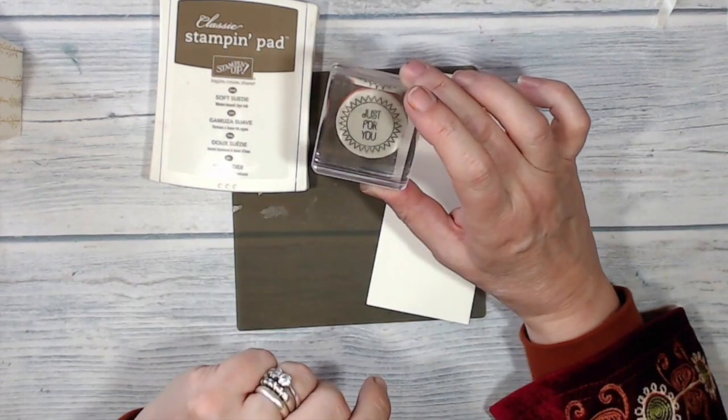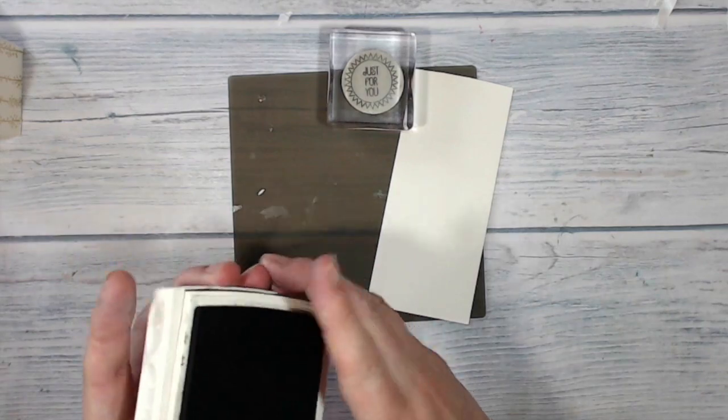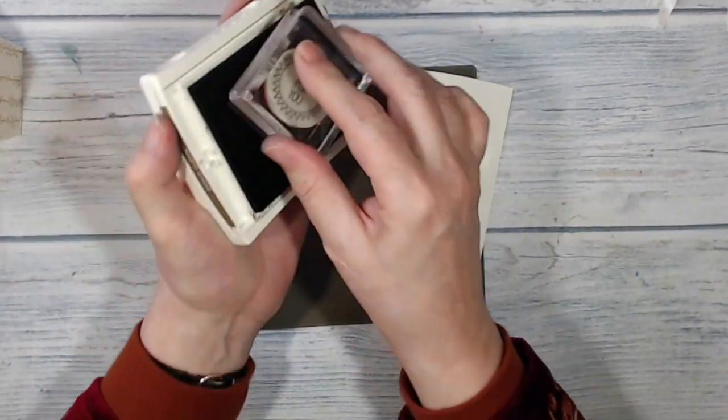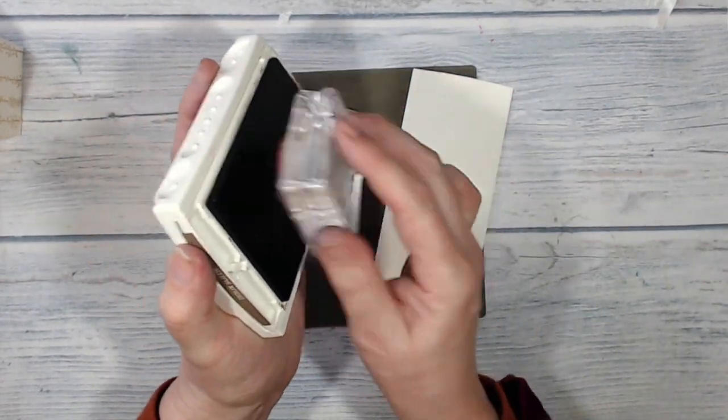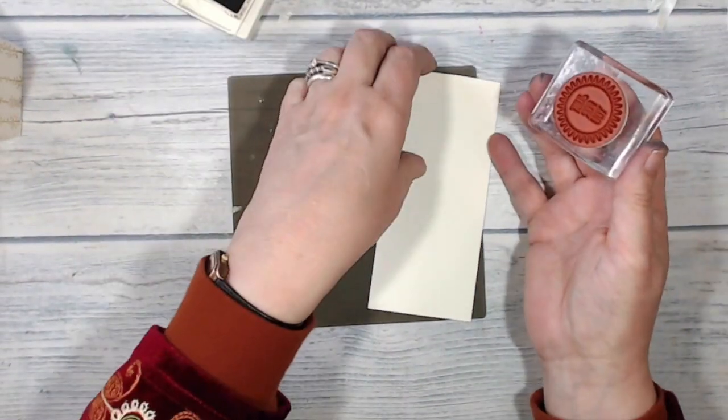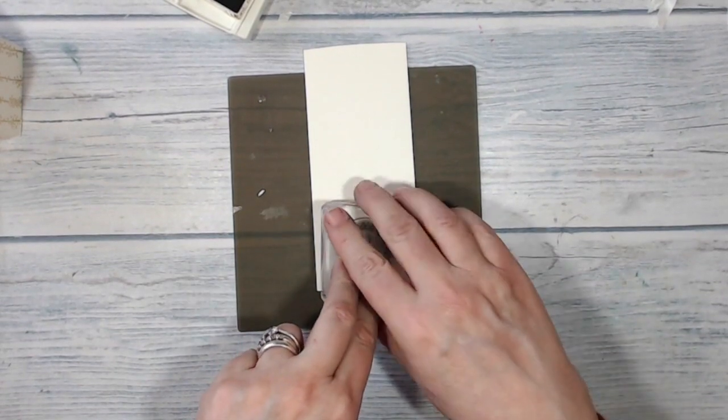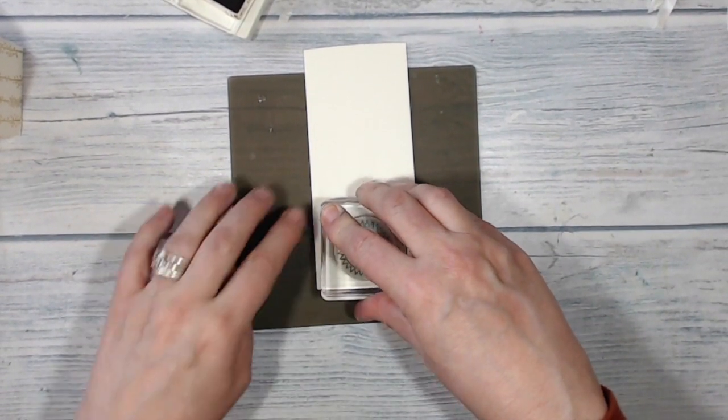I've mounted my sentiment onto a clear block. I've got my Soft Suede ink and my Very Vanilla card. I'm taking the stamp to the pad, not the pad to the stamp—works better for me. I'm just going to press that down and count one, two, three, four, five for the ink to transfer.